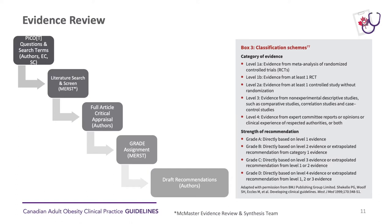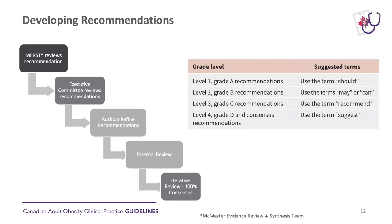This was a very lengthy process. Once the authors appraised each study and decided on the quality of the evidence, MERS then assigned the grade for each paper in Distiller. Once we had the grade for each paper, authors were asked to develop their recommendations based on the highest level of evidence. MERS looked at the level and grade of evidence to suggest the terms to use in the recommendations. The executive committee reviewed all the recommendations to ensure these terms reflected the level and grade of evidence.